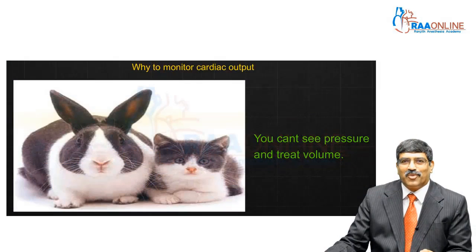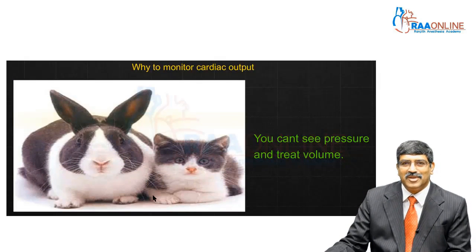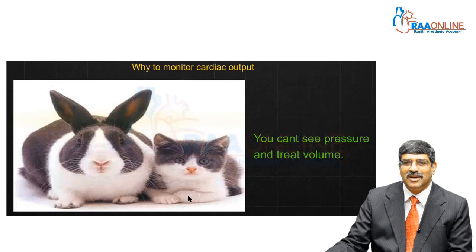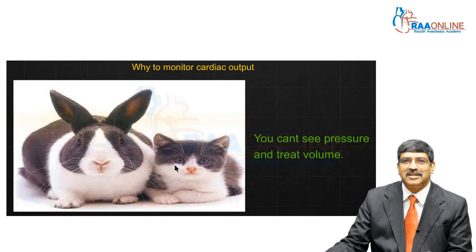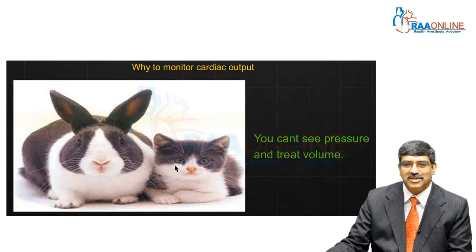Why do we have to monitor cardiac output? Look at two animals — one is a rabbit, one is a cat. Both look similar. By looking at them, you can't tell them apart to treat appropriately. That is exactly what happens with the pressure-volume relationship — you can't look at pressure and treat volume.